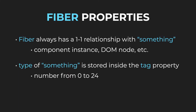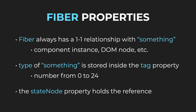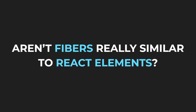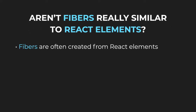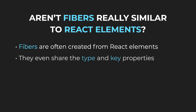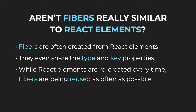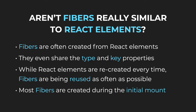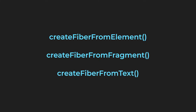The state node property holds the reference to the thing itself, and using this property React can access the state associated with the fiber. You might already be thinking that fibers are quite similar to React elements — that is partially true, because they are in fact very often created from React elements. They even share some properties, specifically the type and the key. An important difference is that while React elements are created every time, React fibers are being reused as often as possible. They have to be created at some point — that point is the initial mount — but after that they are mostly reused. In the source code you will find functions like createFiberFromElement, createFiberFromFragment, createFiberFromText, and so on.